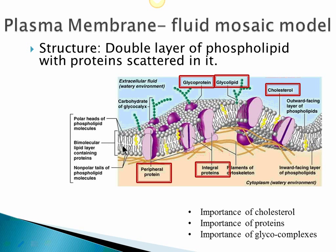Cholesterol is very important because it gives stability and fluidity to the plasma membrane. If the temperature is too cold, fat tends to congeal and become solid, so cholesterol makes the membrane more fluid. In very hot temperatures, it will make the membrane less fluid. So while cholesterol is often given a bad name because of dietary advice, it does have a purpose — every cell in the body is surrounded by a plasma membrane which requires cholesterol.